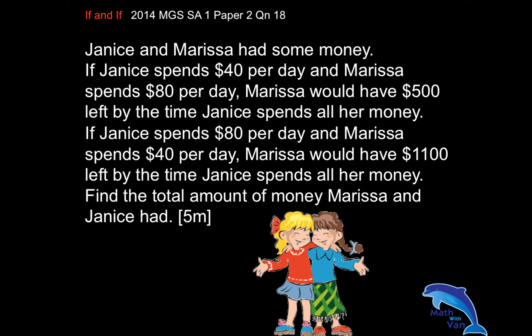Basically it's a very simple question — a double E scenario. The original amount is always the same, and what makes this kind of question even easier is that one of the subjects has spent all her money. So whatever she spent is equal to her original amount of money. Let's take a look at this question from 2014, MGRSSA1, Paper 2, Question 18.